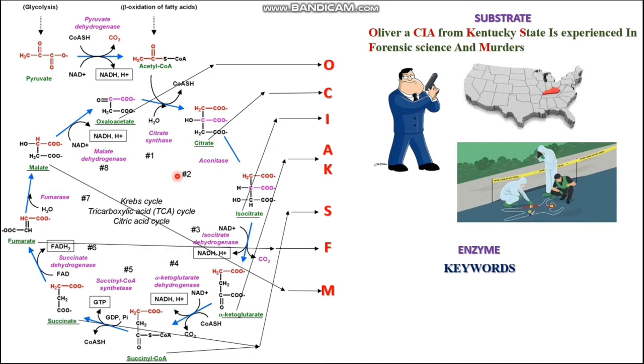So whenever you write the Krebs cycle in the examination, you first write all the substrate names with the arrow diagram, then you fill up the cofactors and enzyme names. Then it will be very easy for you to get high marks in examination.